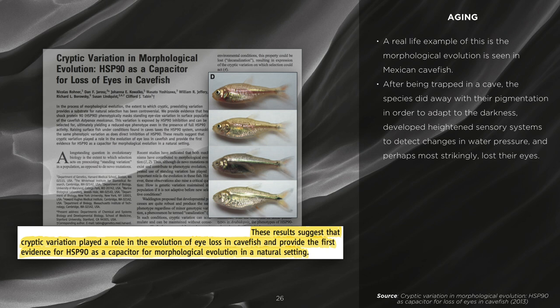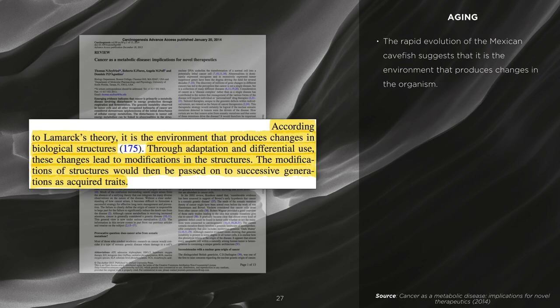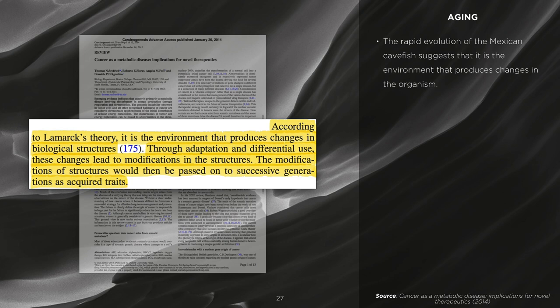A real-life example of this is the morphological evolution seen in Mexican cave fish. After being trapped in a cave, the species did away with their pigmentation in order to adapt to the darkness, developed heightened sensory systems to detect changes in water pressure, and perhaps most strikingly, lost their eyes. The rapid evolution of the Mexican cave fish suggests that it's the environment's interaction with the organism which produces changes. Ray Peat has suggested that chromosomes are internal resources, not clusters of traits, which aligns with our example of Mexican cave fish as well as the work of Barbara McClintock.